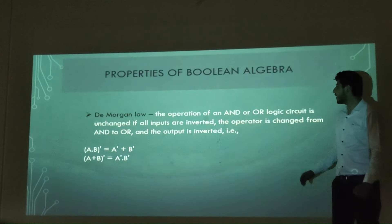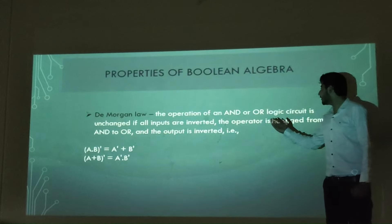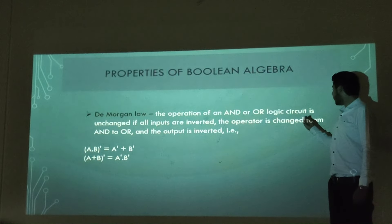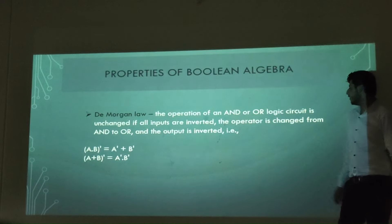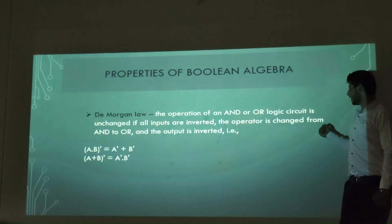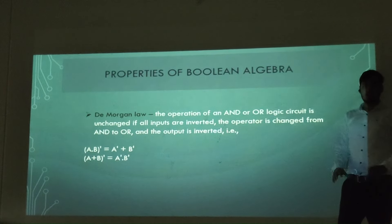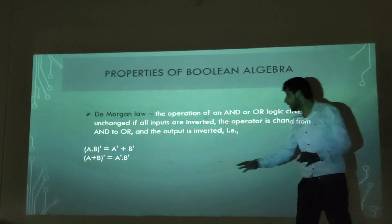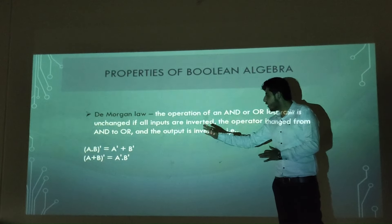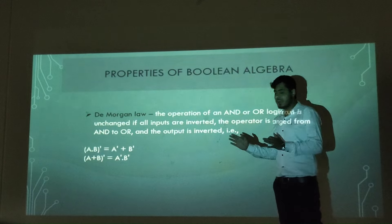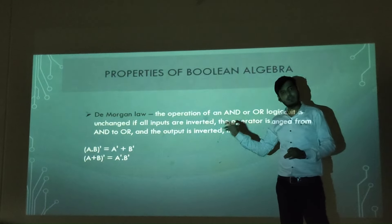The next property is De Morgan's theorem, which is very important. The operation of an AND or OR circuit is unchanged if all inputs are inverted and the operator is changed from AND to OR and the output is inverted. Simplified: (a dot b) complement equals a-complement plus b-complement, and (a plus b) complement equals a-complement dot b-complement.